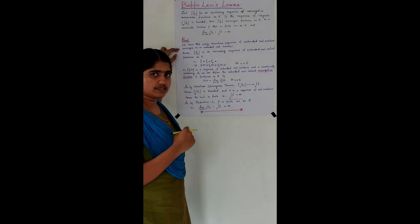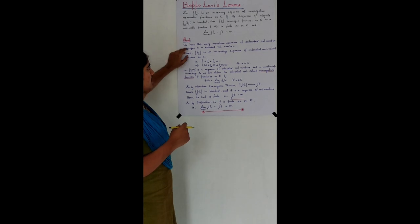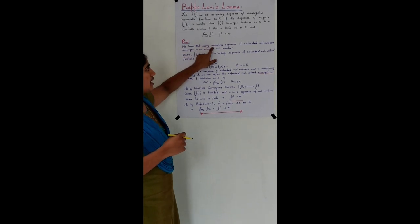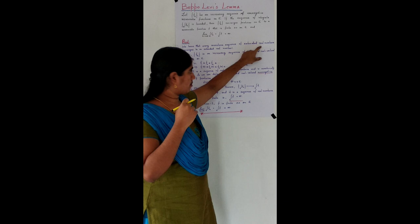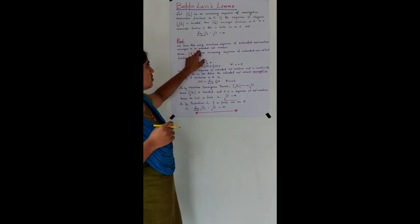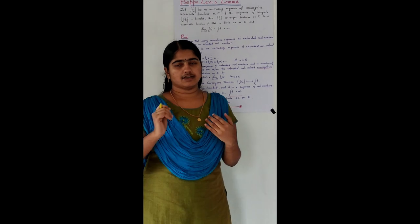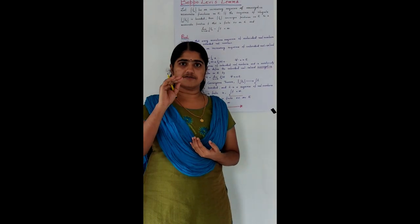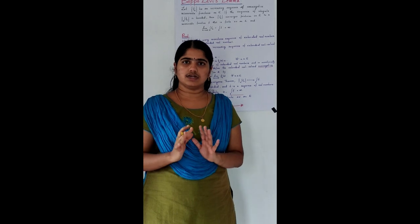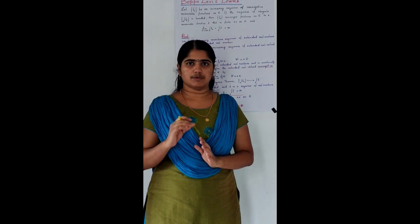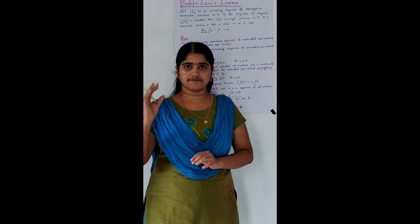We need a result for this: every monotone sequence of extended real numbers converges to an extended real number — that is, it cannot oscillate. A monotone sequence of extended real numbers will converge either to a finite real number or to plus infinity.